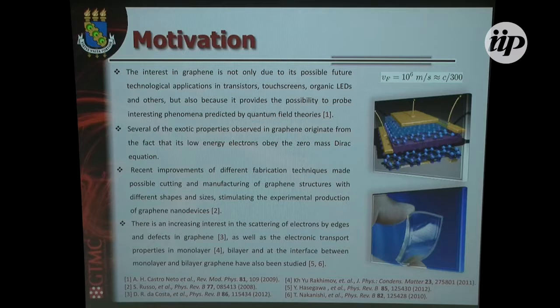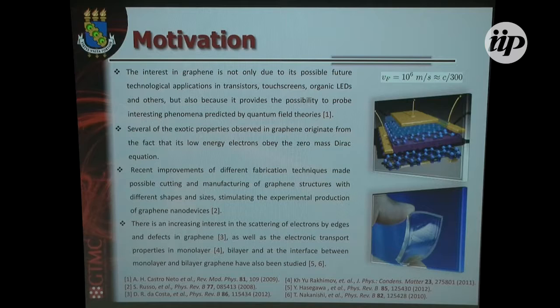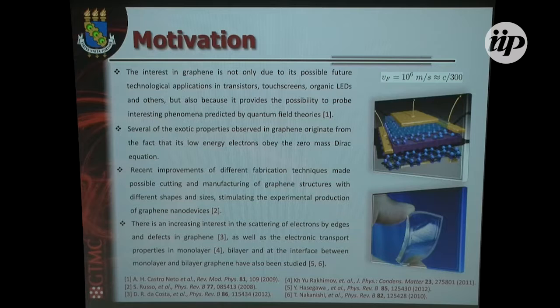The great interest in working with this huge 2D family is not only the possibility to use them in technological applications, but also in the sense that it allows us to check quantum phenomena. This is due to the fact that electrons in graphene behave like massless Dirac fermions — they obey the Dirac equation — so we have a quasi-relativistic particle.